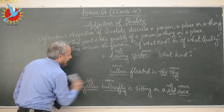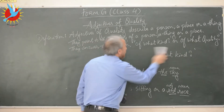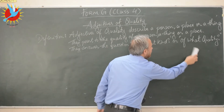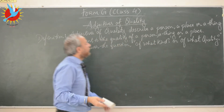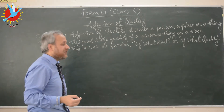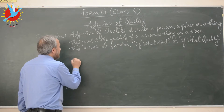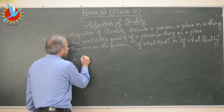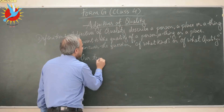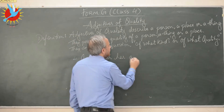'Yellow' describes what kind of butterfly — a yellow butterfly. It is an adjective of color, also called a descriptive adjective or adjective of quality. 'Red' too is a descriptive adjective giving more information about the noun 'rose.' I hope you are understanding the function of adjectives of quality or descriptive adjectives.